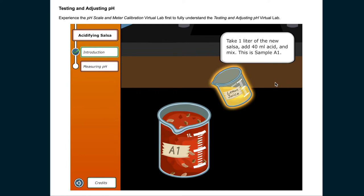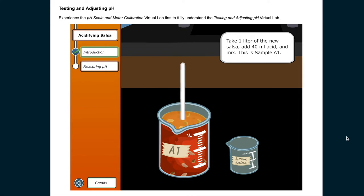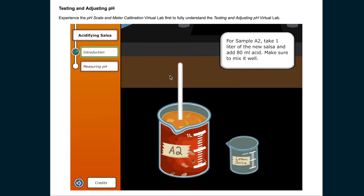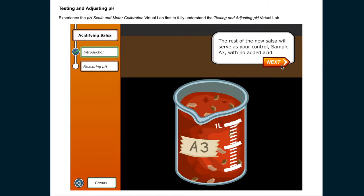Take 1 liter of the new salsa, add 40 milliliters acid, and mix. This is sample A1. For sample A2, take 1 liter of the new salsa and add 80 milliliters acid. Make sure to mix it well. The rest of the new salsa will serve as your control, sample A3, with no added acid.